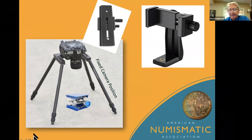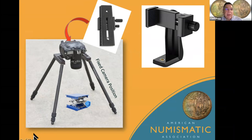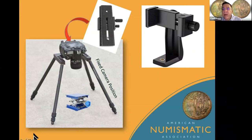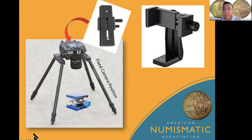Somebody asked if we use bellows. We don't use them in class. The bellows is just a hollow tube that adds distance between the lens and the camera sensor — there are no magnification lenses in there. You may not get sharp photos and you have to add a lot of light to compensate. Fixed focus lenses have optical elements so you can shoot at very low light levels, whereas with bellows you have to add a lot of light.